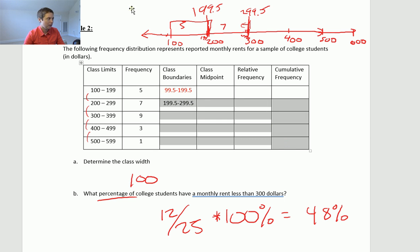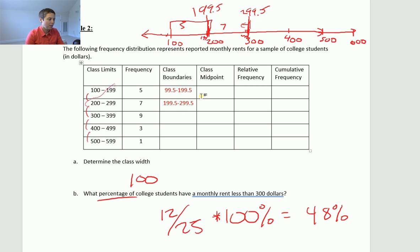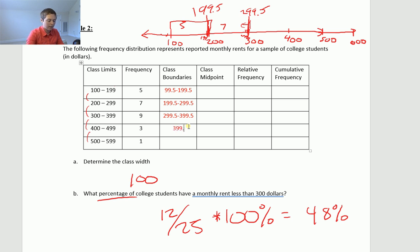Unlike class limits where the upper and lower don't match between consecutive classes, class boundaries do match — the upper boundary of one class equals the lower boundary of the next. That's basically what boundaries do: they get rid of the gap. So continuing: 399.5 to 499.5, and then 499.5 to 599.5.